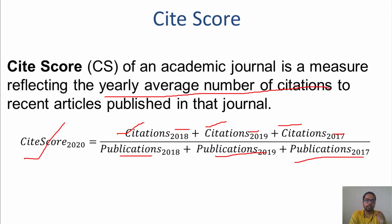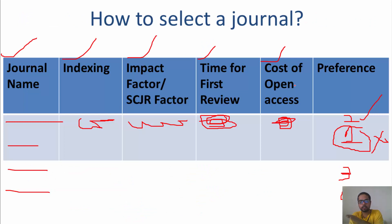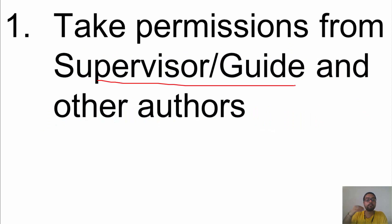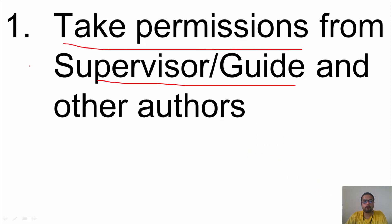Your supervisor has better knowledge about journal selection than you, so they can tell you whether your choice is appropriate. The first thing to do after selecting a journal is to get permission from your supervisor and all co-authors — send a mail with your manuscript asking if they permit you to submit it to that journal.